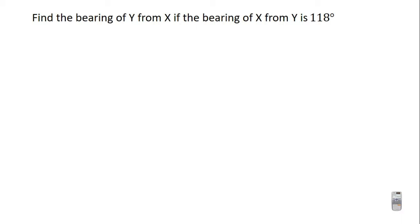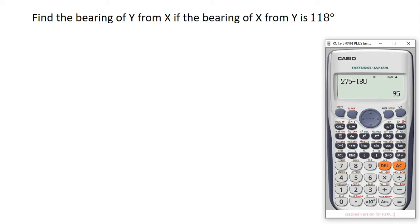The question is asking us to find the back bearing. We learned in the previous video that to find the back bearing, if the bearing given to you is between 0 degrees and 180 degrees, add 180 degrees to it. Here the angle we have is 118 degrees, which is between 0 and 180 degrees, so we add 180 degrees to 118 degrees: 118 + 180 = 298 degrees. So using the formula, the back bearing is 298 degrees.